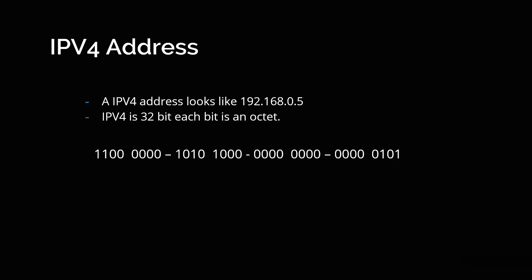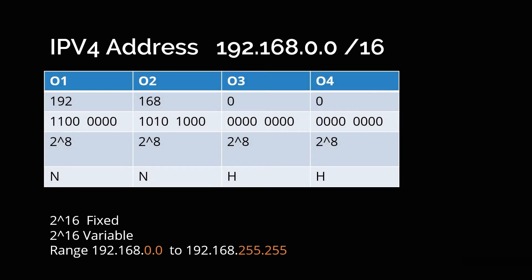Let us understand this a bit more. As discussed, an IP address is divided into four octets. Say for example, you have an IP address in the range of 192.168.0.0/16. Let us break this down. The first octet is 192, the second is 168, the third is 0, and the fourth is 0. The binary representation of 192 is 11000000. Similarly, we write the binary representation of each octet. Each octet is 2 to the power of 8.